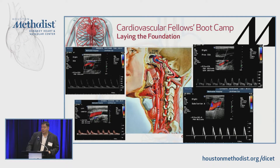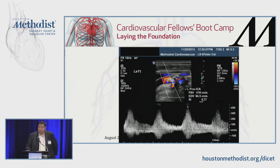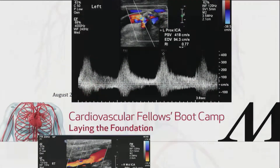Remember: the subclavian, feeding the arm, is high resistance. ICA, feeding the brain, is low resistance. ECA, feeding the muscle, needs to be high resistance. These examples show you a nice tight ICA stenosis — most likely you're going to operate on this one.